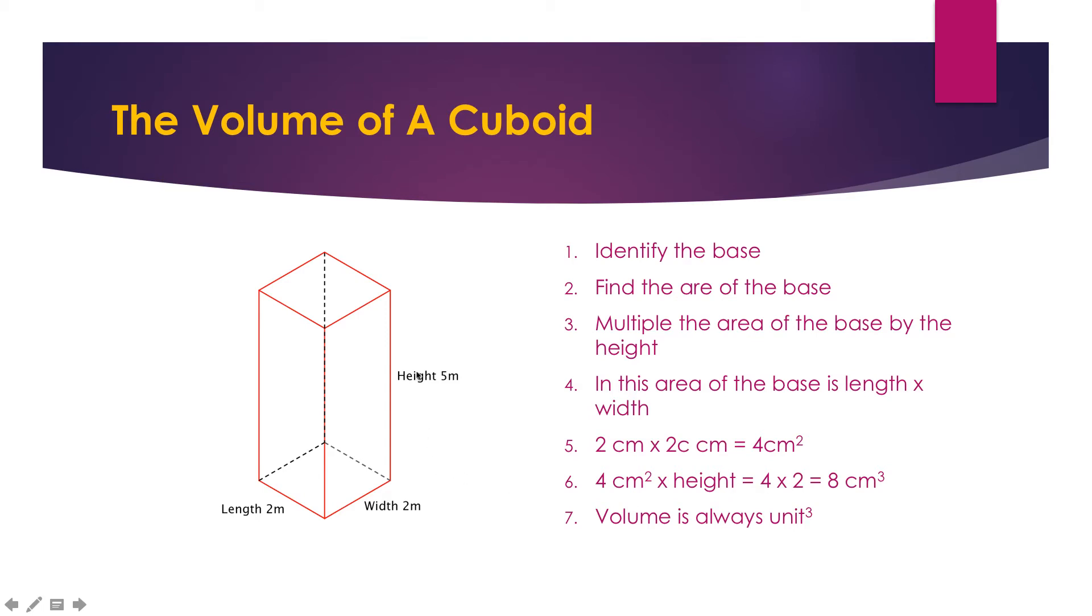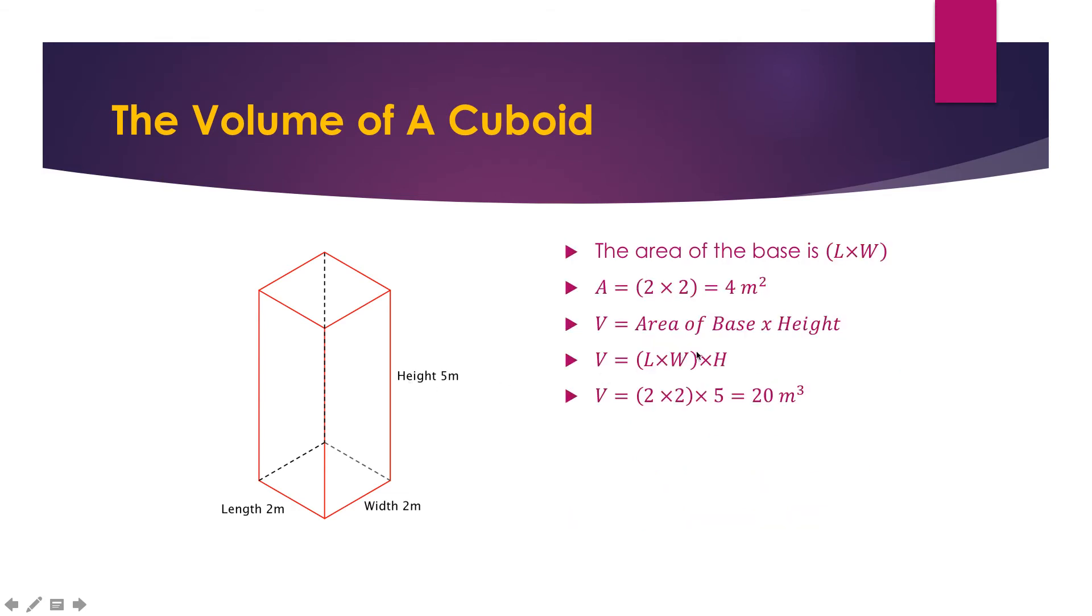And then we multiply by the height, which is 5 meters. So in this case we go 2 times 2, which gives us 4 meters squared for the area of the base. Then we multiply that by the height, which is 5. So 2 times 2 times 5 equals 20 meters cubed.